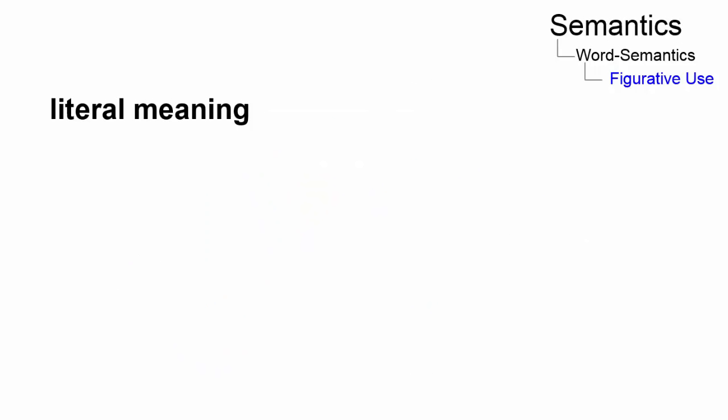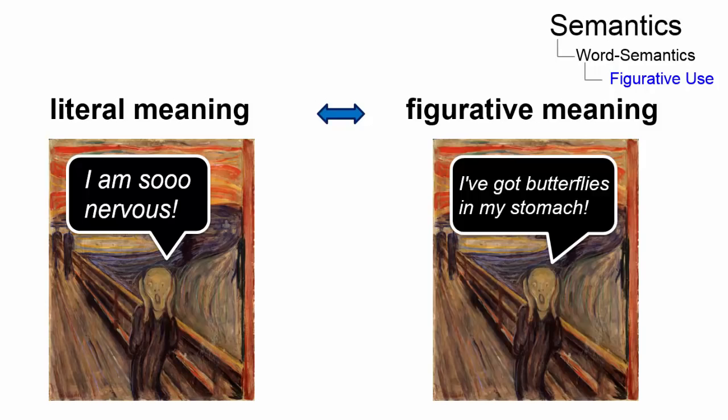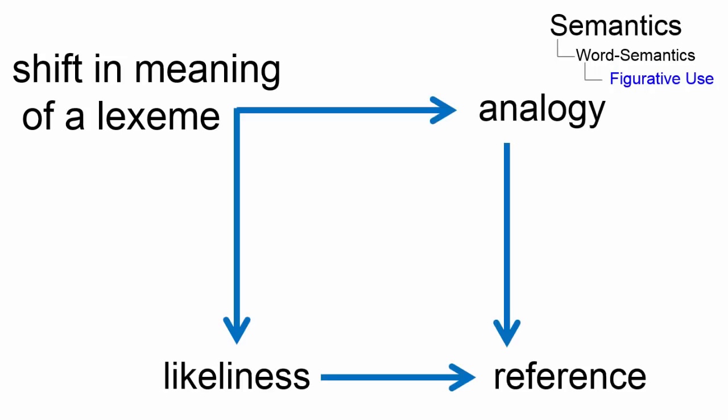While we use literal meaning in language to communicate exactly what we mean, figurative meaning uses a word or phrase in a way that extends beyond its factual description. This shift in meaning is often based on an analogy or likeness between different things.